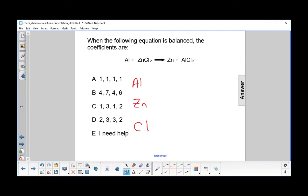On the left-hand side, there's one aluminum, one zinc, two chlorines, and then instead of rewriting the letters, we'll just put on the right-hand side there's one zinc, one aluminum, and three chlorines.